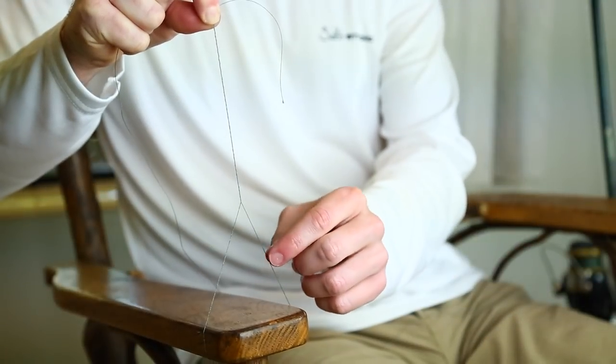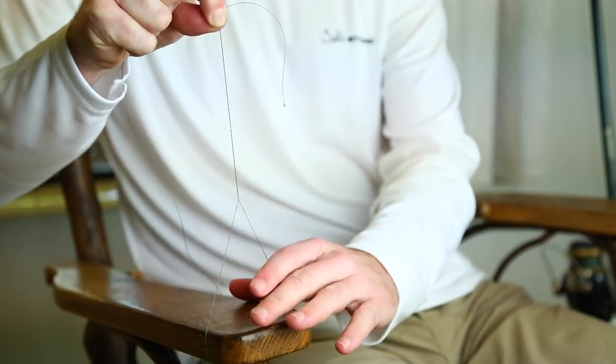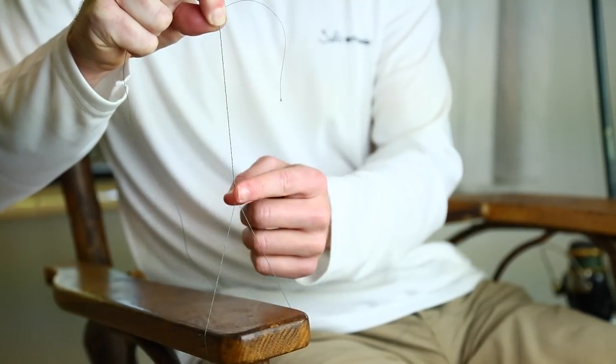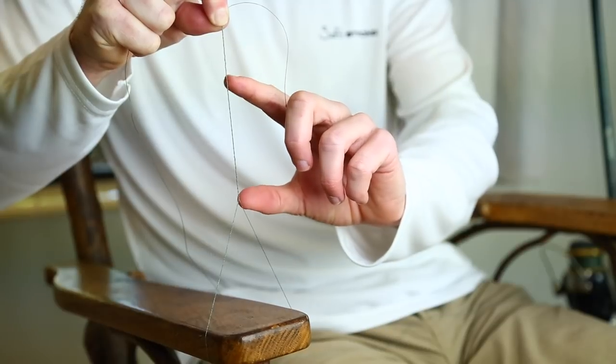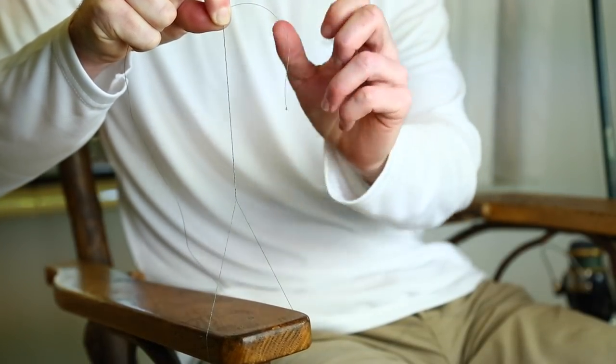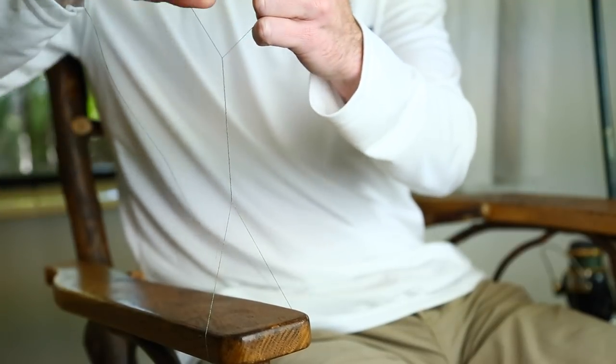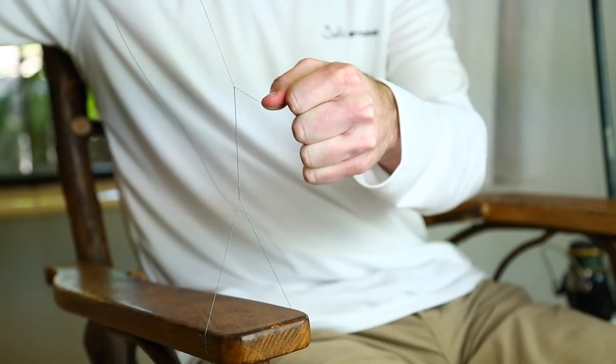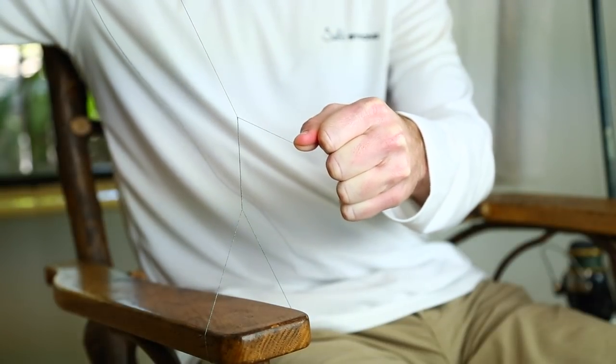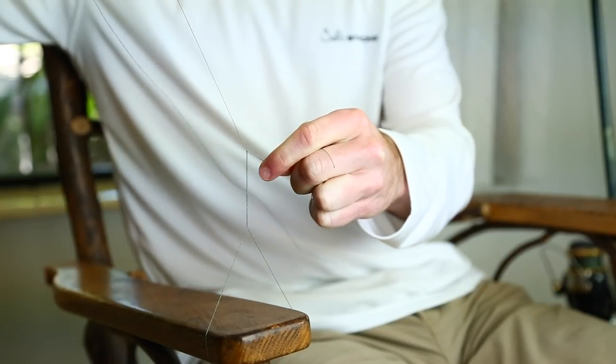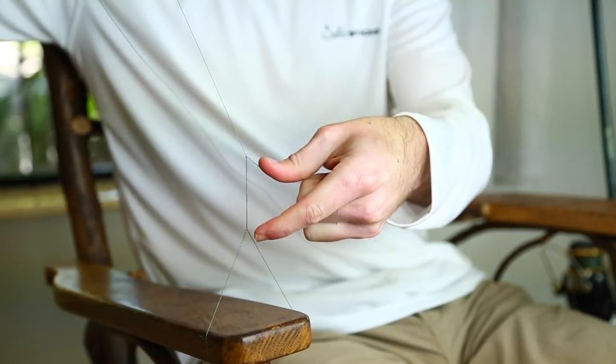Alright so we just attached the loop side to the chair so we have our fixed object. Now we have all these twists just going up the line. Our job now is to get all these twists in the smallest most condensed space possible. So to do that we grab with one arm, hold on to the main line and pull up, and with the other one just pull the tag end at a little bit more than a 90 degree angle. You can see all those twists are just getting compacted there in that one area.